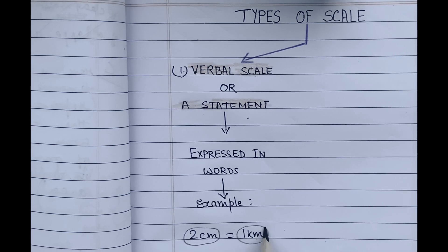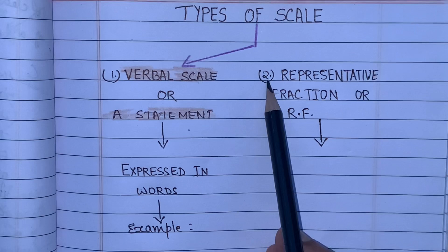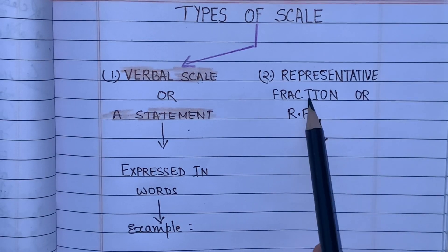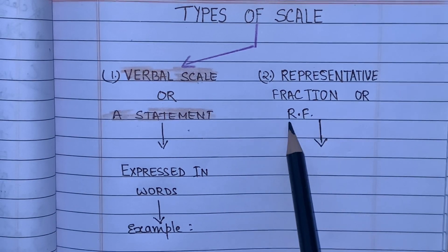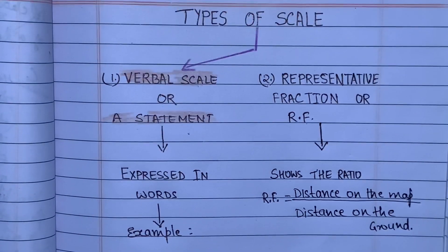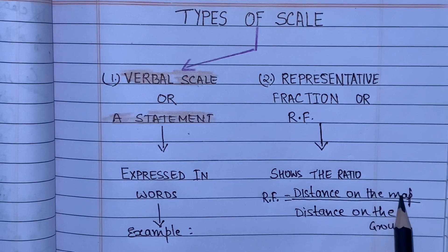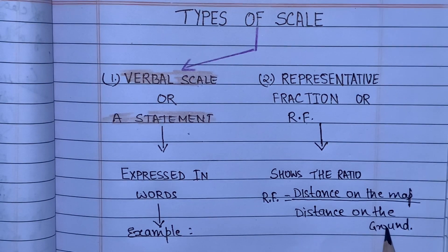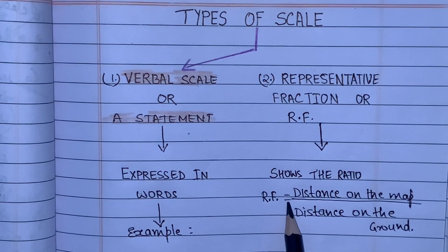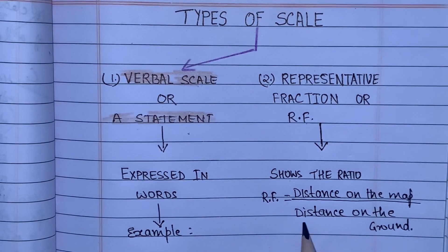The second type is the representative fraction, or R.F. This method shows the ratio between the distance on the map to the distance on the ground. You can write it as: R.F. equals distance on the map divided by distance on the ground.